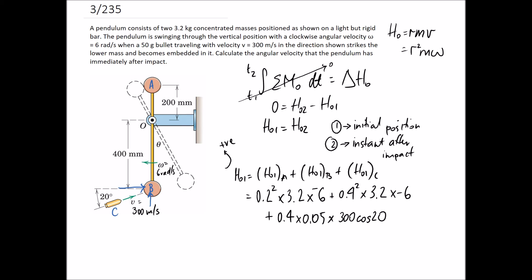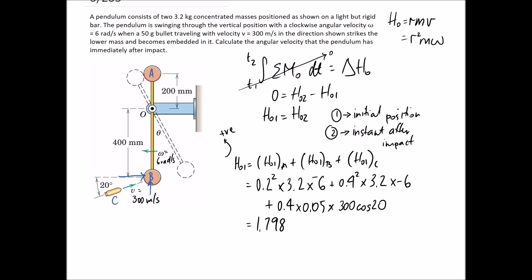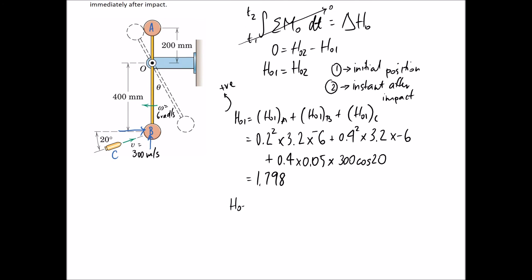If you simplify down this equation, you end up with 1.798 as the solution. Now all we need to do is repeat this process, except for the second point of interest, which is the instant after the impact. Again, writing out our equation, it's going to be the sum of what's happening for ball A, plus what's happening for balls B and C, and this time B and C are going to be joined to each other, so I'm going to put them in the same term.